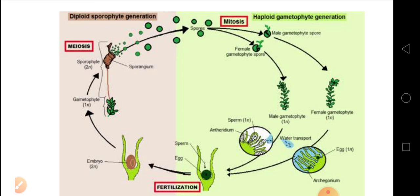In this video, we will cover the second part of the chapter, that is bryophyta. Bryophyta we will discuss in this video. Do you know what is bryophytes and where it is found? Bryophytes is also a plant that is found in shaded, humid and damp areas.